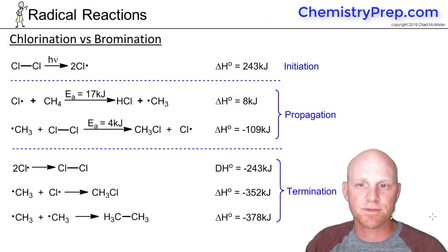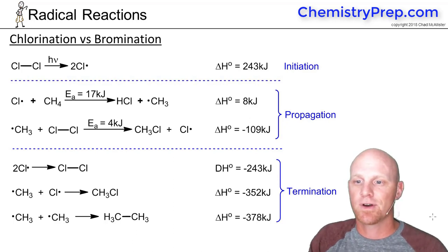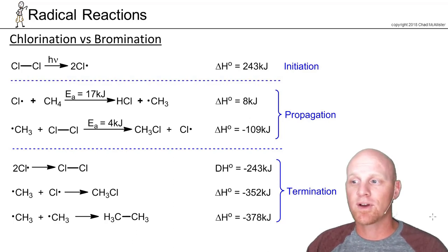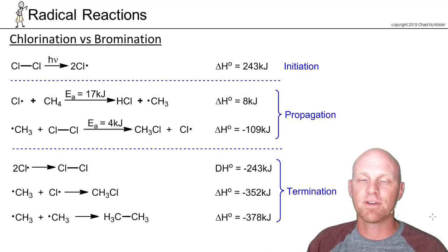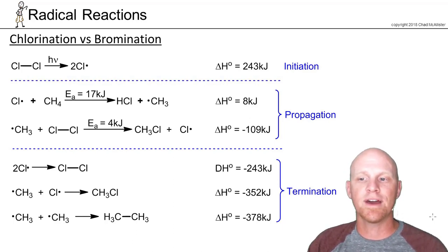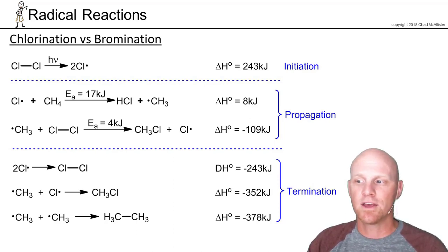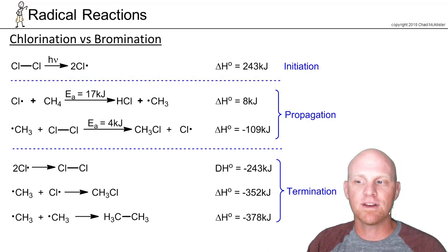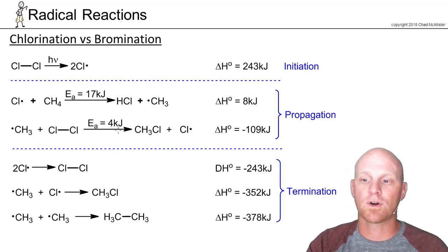We're going to take a closer look at the mechanism for free radical chlorination and free radical bromination. These mechanisms are very different from SN1, SN2, E1, E2, or alkene/alkyne addition reactions. Instead of a linear sequence of steps, we have a series of steps classified as initiation, propagation, and termination. The propagation steps repeat thousands, millions, or even billions of times before termination, and it's in those propagation steps where we actually form our product.